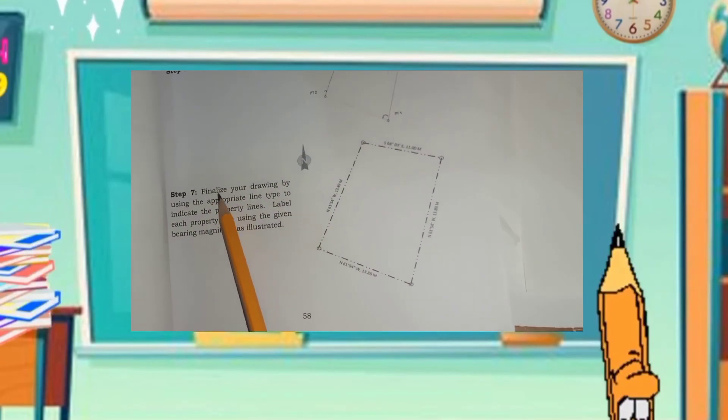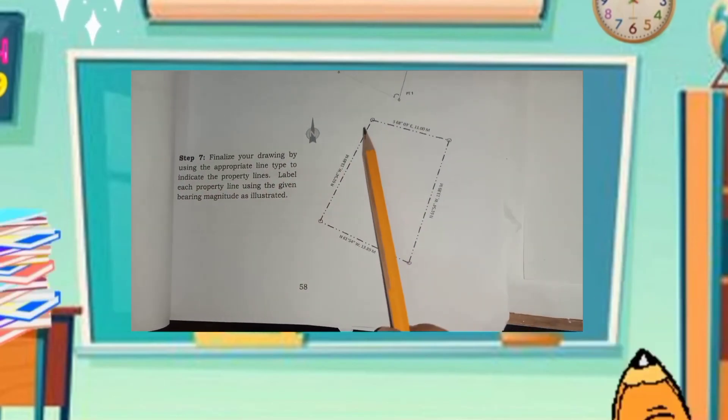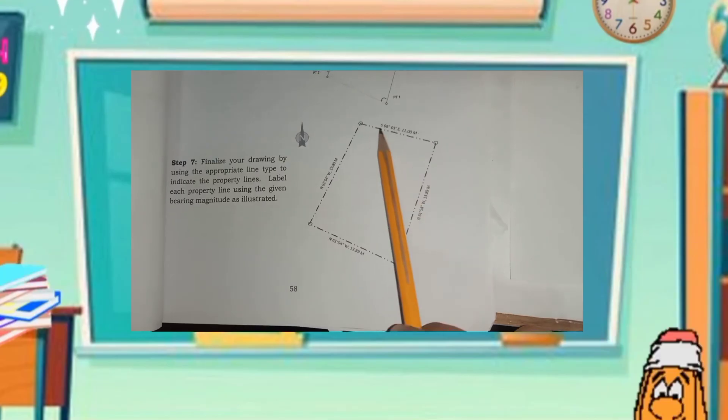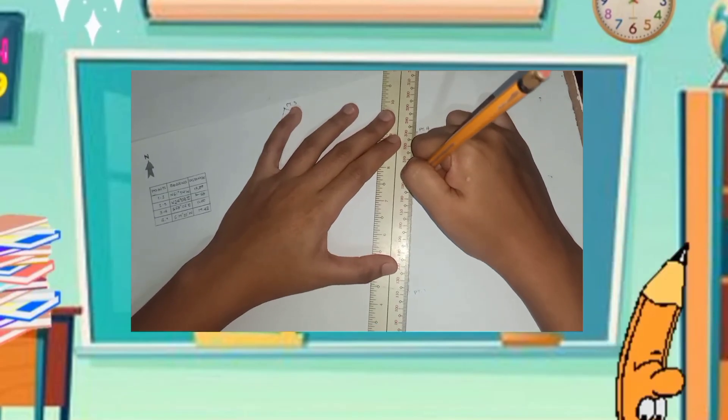Step 7, finalize your drawing by using the appropriate line type to indicate the property lines. Label each property lines using the given bearing magnitude as illustrated.